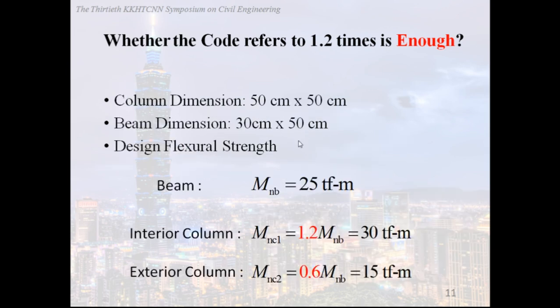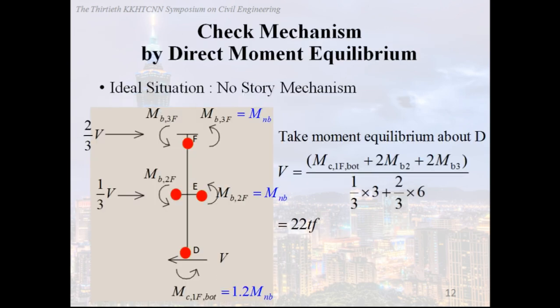And there are also some dimensional descriptions. In order to satisfy the code, we decide flexural strands of beam and columns. Check mechanism. Based on the previous assumption, we want to know what failure mode will happen.